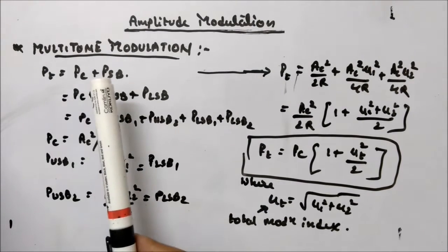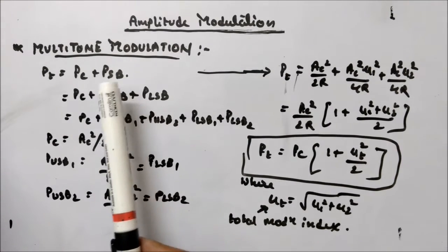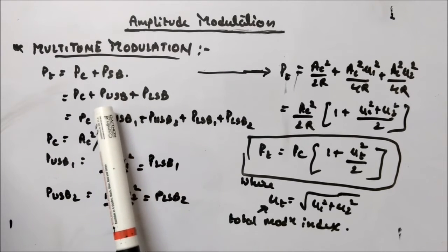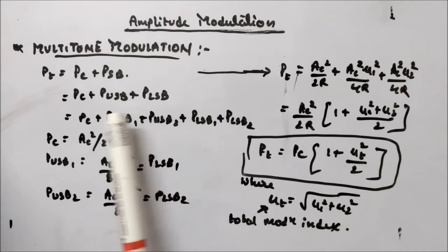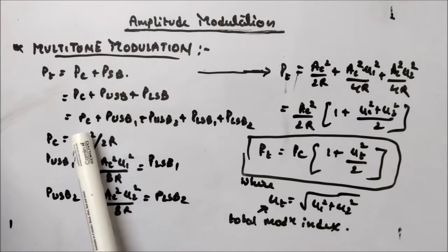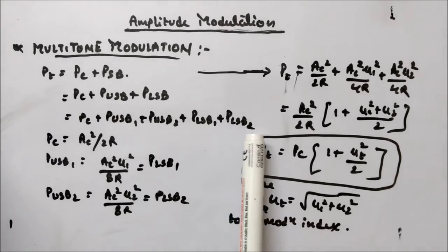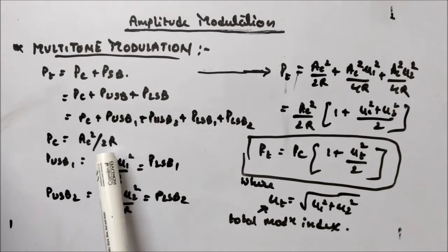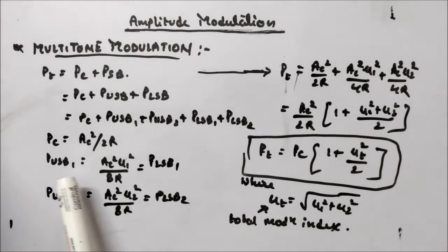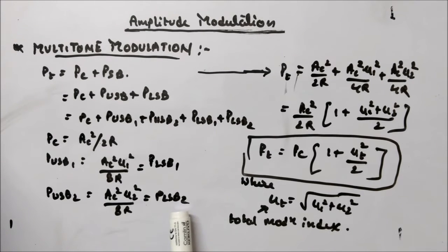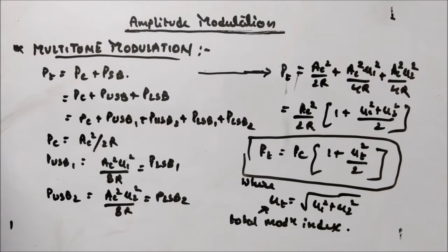Now let's look at the power of the multi-tone modulated signal. Total power equals carrier power plus sideband power. We can write sideband power as upper sideband plus lower sideband power, giving PT = PC + PUSB1 + PUSB2 + PLSB1 + PLSB2. Here PC = AC²/2R as before. PUSB1 = PLSB1 = AC²·mu1²/8R, and PUSB2 = PLSB2 = AC²·mu2²/8R, which you can calculate from the spectrum.